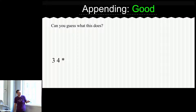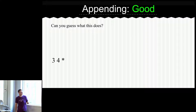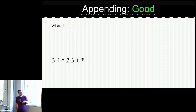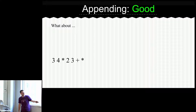Here's a small program. Can we guess what it does? Three, four, times — times is acting on what was already there, the three and the four, giving twelve. Going further: three four times, two three plus times. That's looking crazy, especially if you're familiar with other types of programming languages — you're probably just shocked at two operators next to each other.